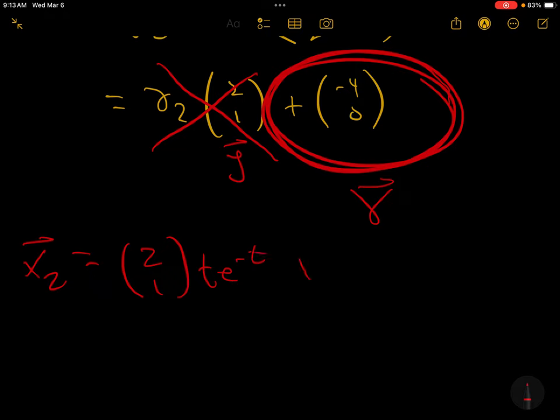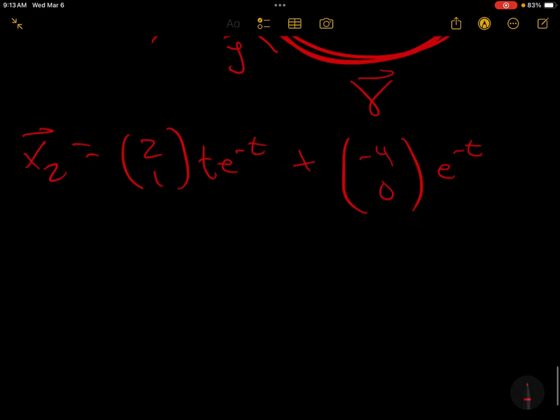So our second solution is (2, 1) t e to the minus t plus (-4, 0) e to the minus t.